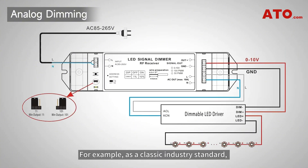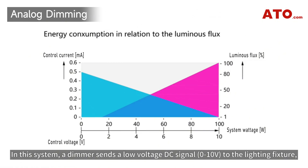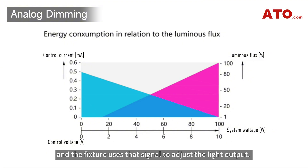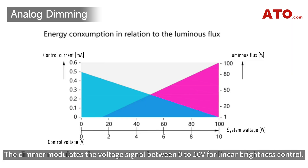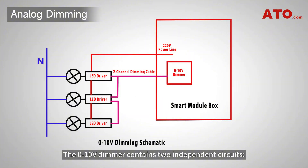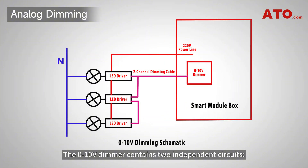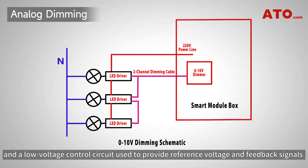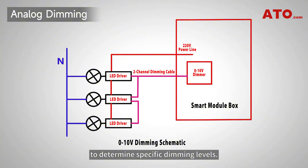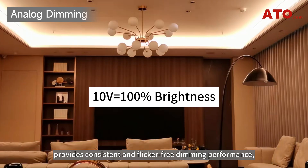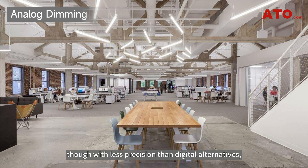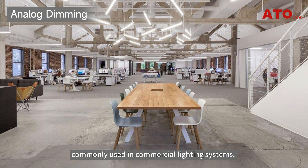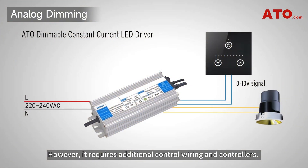For example, as a classic industry standard, 0 to 10 volt dimming is a type of analog dimming. In this system, a dimmer sends a low-voltage DC signal to the lighting fixture, and the fixture uses that signal to adjust the light output. The dimmer modulates the voltage signal between 0 to 10 volts for linear brightness control. The 0 to 10 volt dimmer contains two independent circuits: a standard voltage circuit and a low-voltage control circuit used to provide reference voltage and feedback signals to determine specific dimming levels. This reliable dimming approach provides consistent and flicker-free dimming performance, though with less precision than digital alternatives, commonly used in commercial lighting systems. However, it requires additional control wiring and controllers.